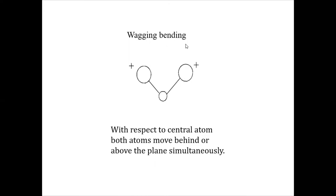Next, wagging bending vibrations. Imagine a bird whose wings are moving upward and downward simultaneously on both sides. With respect to the central atom — like the body of the bird — if both atoms move behind or above the plane simultaneously, it looks like wagging. So when both atoms go above or below the plane together, these bending vibrations are called wagging bending vibrations.